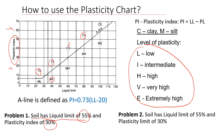We're going to find where we have a liquid limit of 55 — it's here — and the plasticity index of 30 is here. So the point on the chart will be located right here, and this point is above the A-line, which means that the soil we are dealing with is clay. The classification of that soil based on its plasticity will be CH, which is clay of high plasticity.